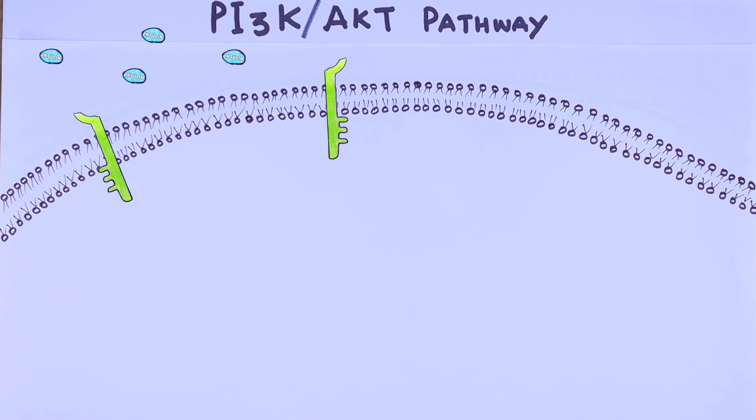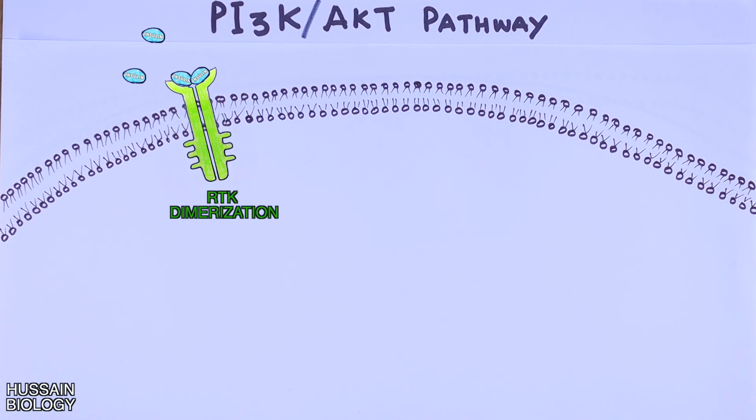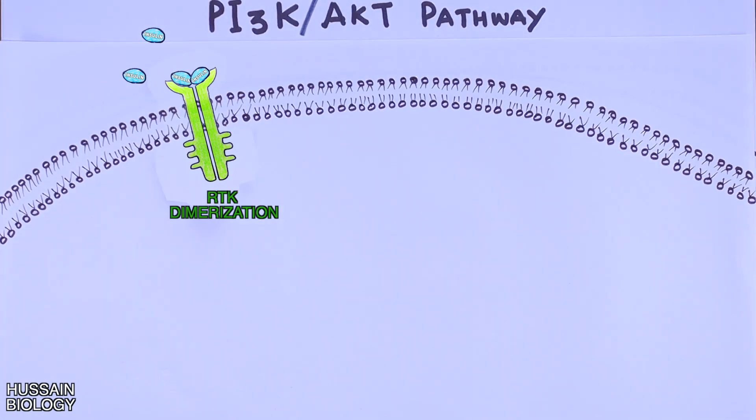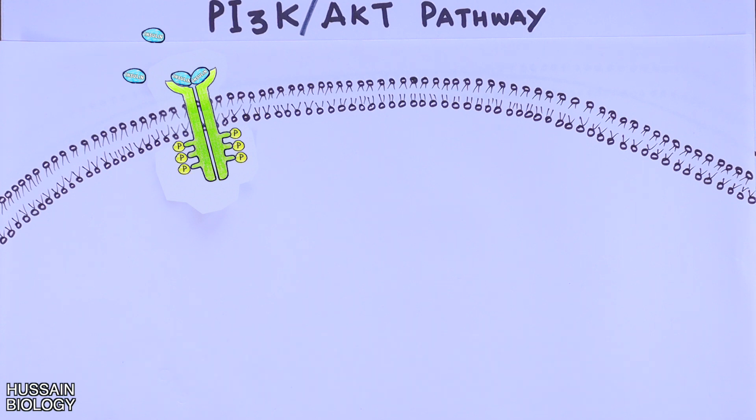Here in this diagram we have insulin as the signaling molecule for PI3K AKT pathway. To drive this pathway, first of all insulin molecules bind with the insulin receptor, or we can say RTK monomers. Binding of insulin towards RTK monomers initiates the dimerization of RTK monomers. Once we get the dimerization done, the tyrosine kinase domains of receptor tyrosine kinase are autophosphorylated in a process of cross phosphorylation.